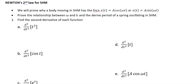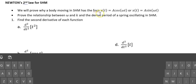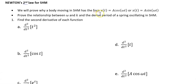So this is going to be a fun video. In this video, we're going to go ahead and use Newton's second law and apply it to simple harmonic motion and prove why something moving in simple harmonic motion has the function x(t) = A·cos(ωt) or x(t) = A·sin(ωt). We'll also prove the relationship between omega and k, and derive the period of a simple spring oscillating in simple harmonic motion.